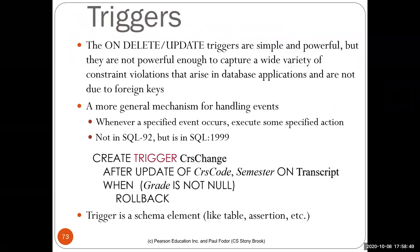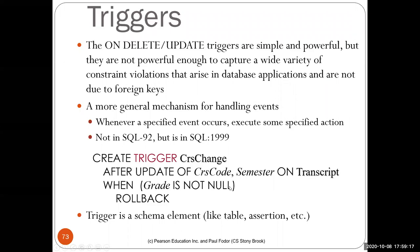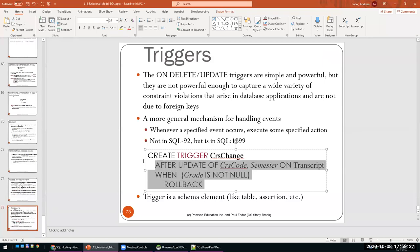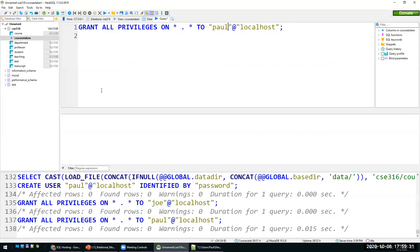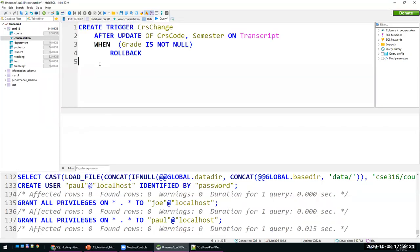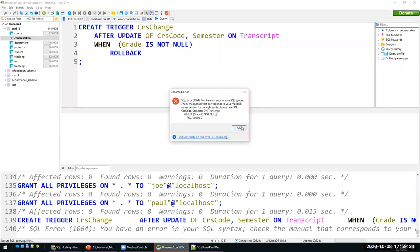Another way to create constraint-like behavior is with triggers, which are part of SQL 1999. Triggers define what happens when a certain update occurs — for instance, if somebody tries to update the course code and semester on a transcript tuple when the grade is not null, the result is a rollback. This statement is not supported in MariaDB — this is the last feature covered today that MariaDB doesn't support.